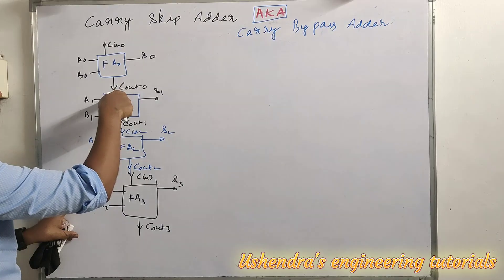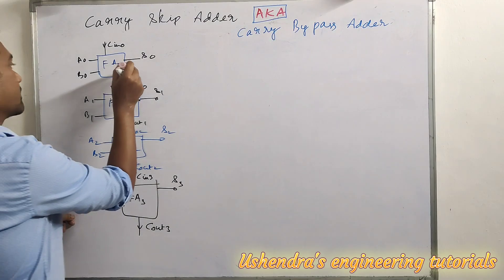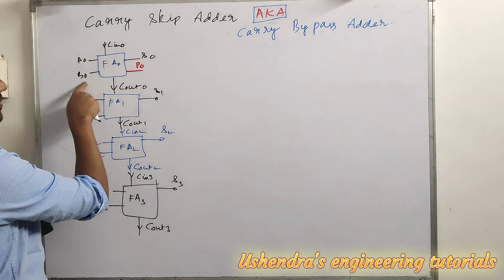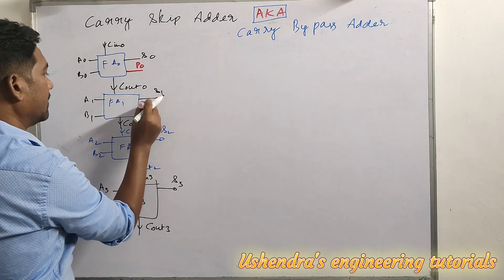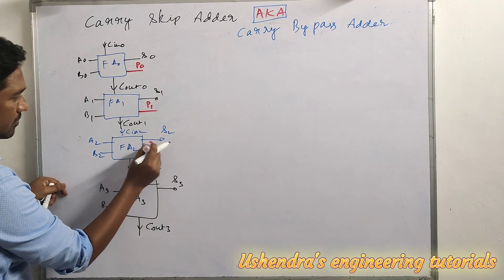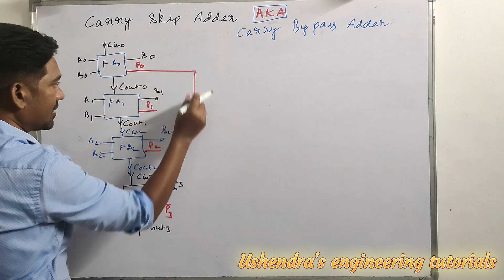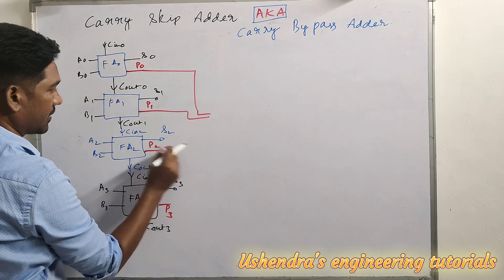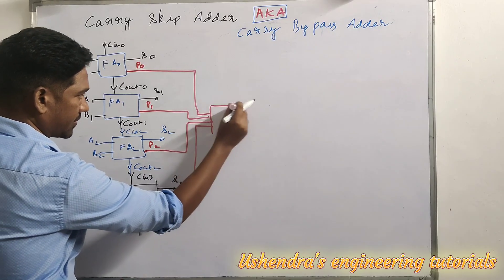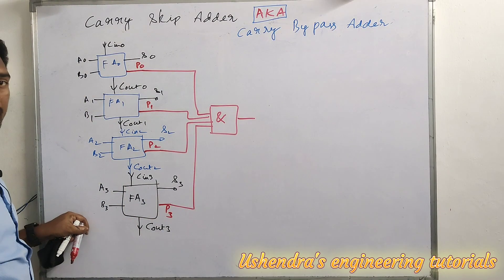That additional output is the propagate signal. P0 is the XOR operation between A0 and B0. We also have P1, P2, and P3 — a propagate signal from each and every full adder. All these propagate signals P0, P1, P2, P3 are connected as inputs to an AND gate.